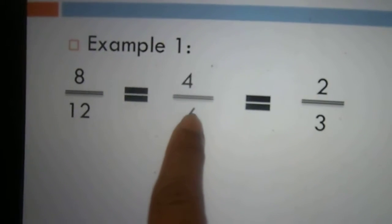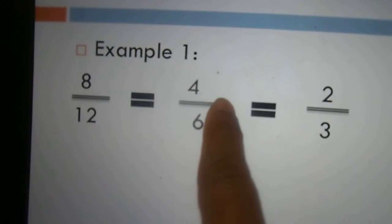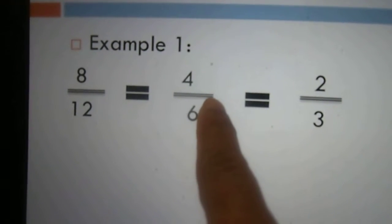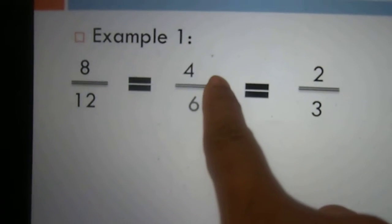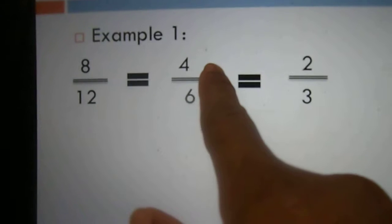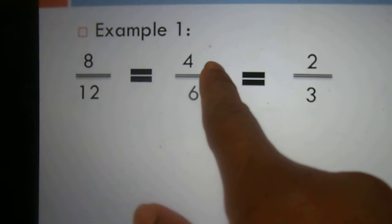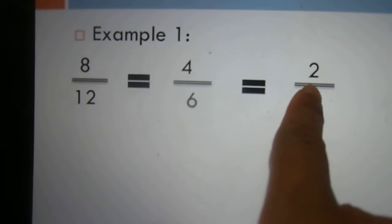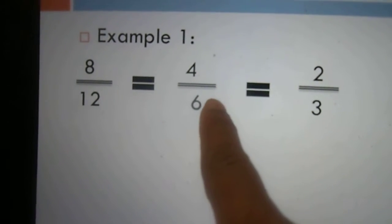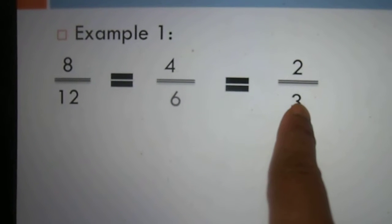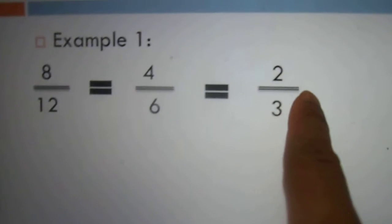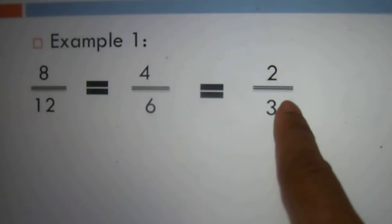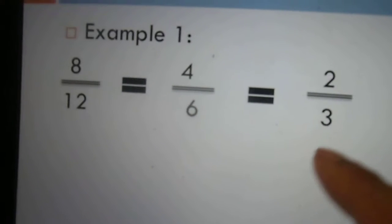We look at the numbers again: 4 and 6. What can divide both numbers? 2 can still divide. So 2 divides 4, giving us 2, and 2 divides 6, giving us 3. So the answer is 2 over 3 in simplified form.